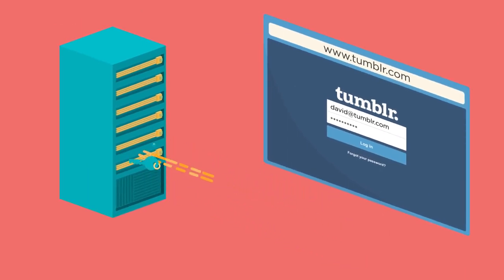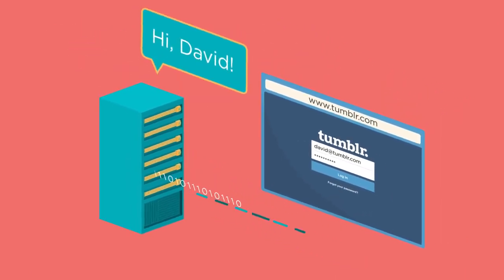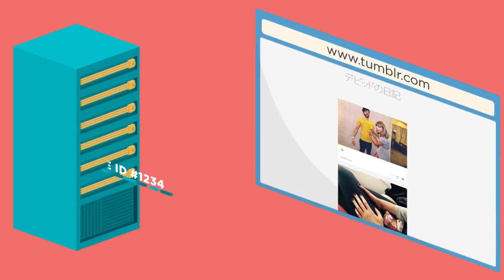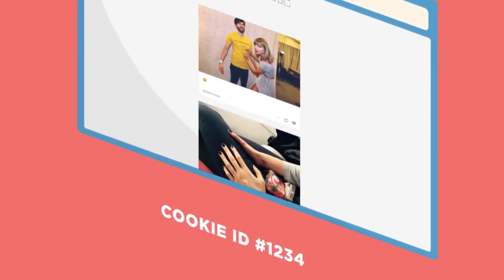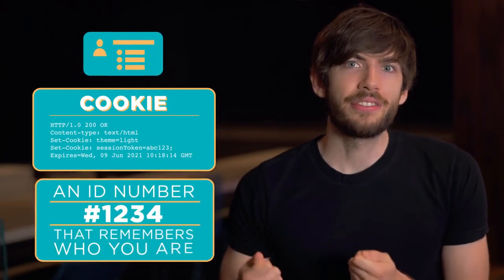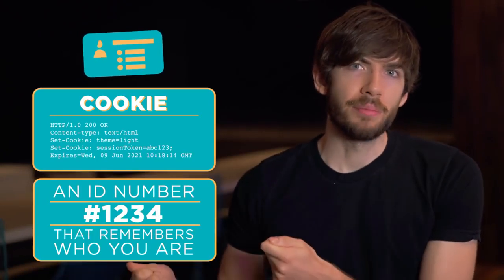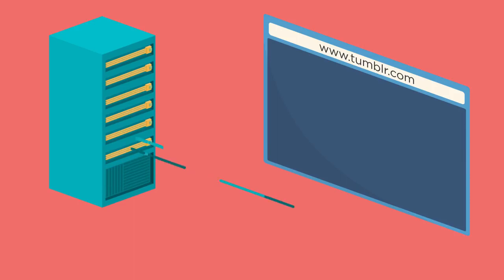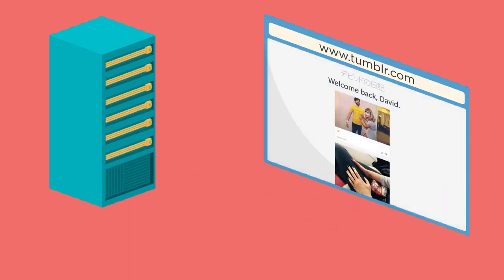That goes to Tumblr's server. Tumblr's server figures out that you're David, and sends a web page back to your browser that says: success, logged in as David. But along with that web page, it also attaches a little bit of invisible cookie data that your browser sees and knows to save. That's really important because it's the only way a website can remember who you are. All that cookie data really is is an ID card for Tumblr — a number that identifies you as David. Your web browser holds on to that number, and the next time you go to Tumblr.com, your browser automatically attaches that ID number with the request it sends to Tumblr's server, so the server knows the request is coming from David.